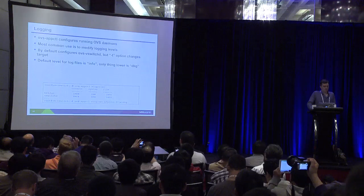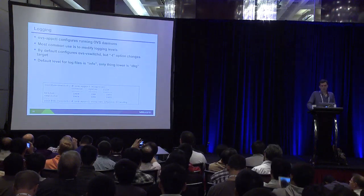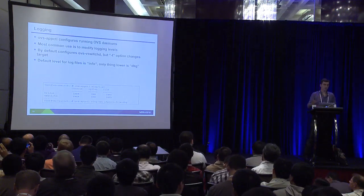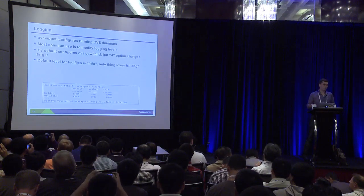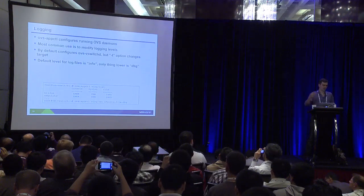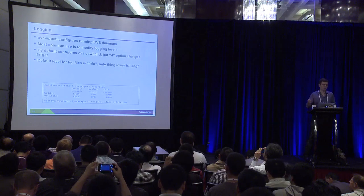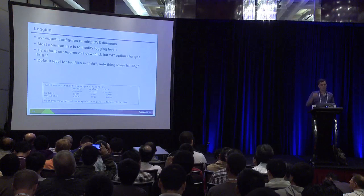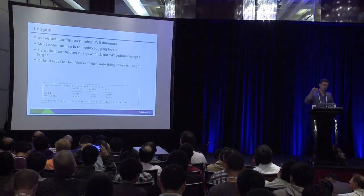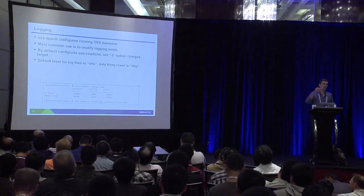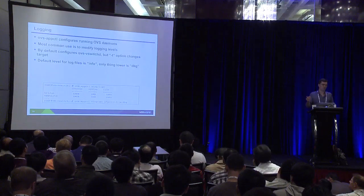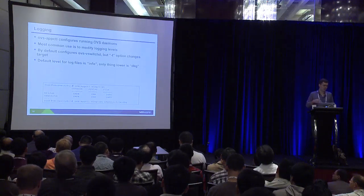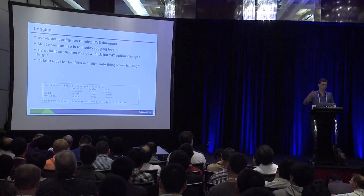For logging, there's an ovs-appctl command for configuring logging. By default it will change the logging of OVS vSwitchD, but you can change the target and do it for OVSDB server or any other daemon running. The log targets will differ depending on when you do ovs-appctl vlog/list or vlog/set. Log files by default are stored in /var/log/openvswitch. The usual ones to look at are ovs-vswitchd.log and ovsdb-server.log. Some information is also stored in system log files, typically in /var/log/messages. The configuration database is essentially a log as well — you can run the show-log command and see what happened to the configuration and how it got into the state it's in.